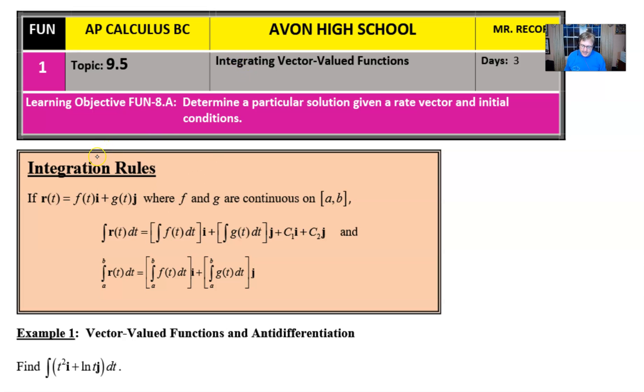Notice the integration rules table that's provided here basically just outlines the same fact that we've already seen before with limits and derivatives—that you're going to do your work in isolation. In other words, if r(t) is defined by f(t)i + g(t)j, where f and g are continuous functions on the closed interval [a,b].